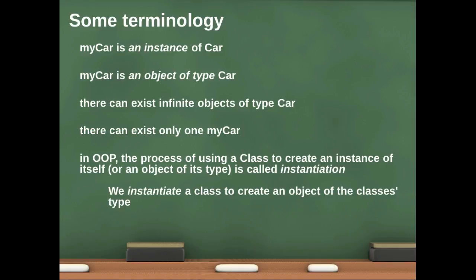We can make as many cars as we want. There can exist infinite objects of type Car, but there can only exist one myCar object at any given time. Now of course, in object-oriented programming just as in real life, we can change some of the properties of myCar over time. But as an entity, as an object, myCar can only exist, it is unique.